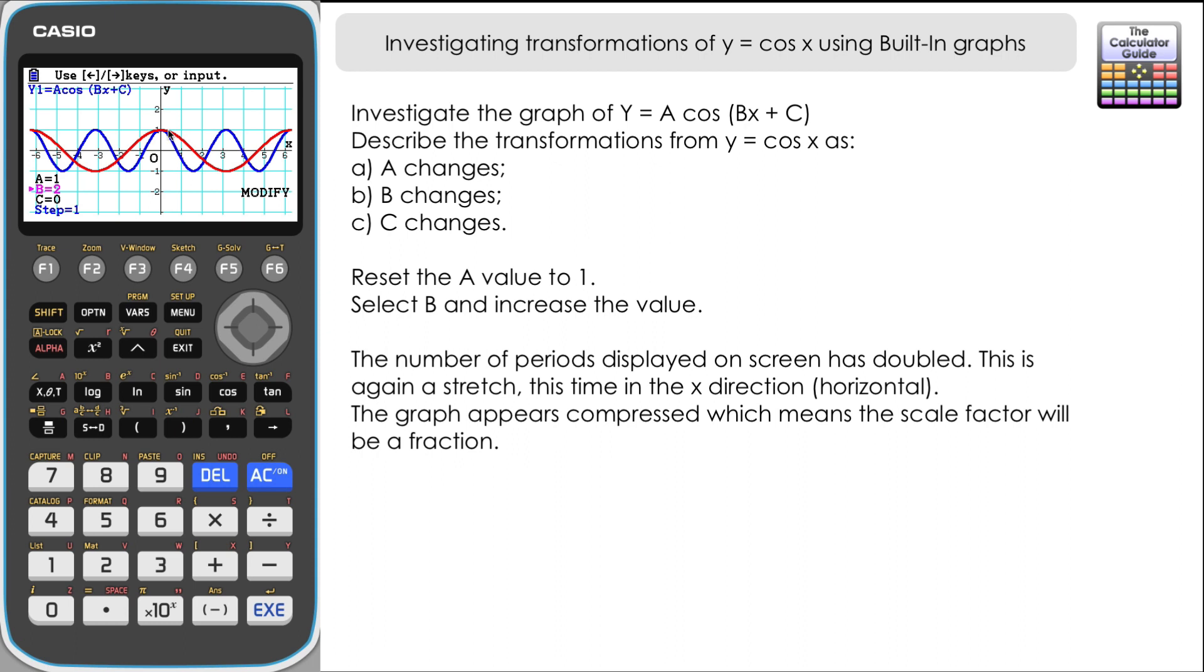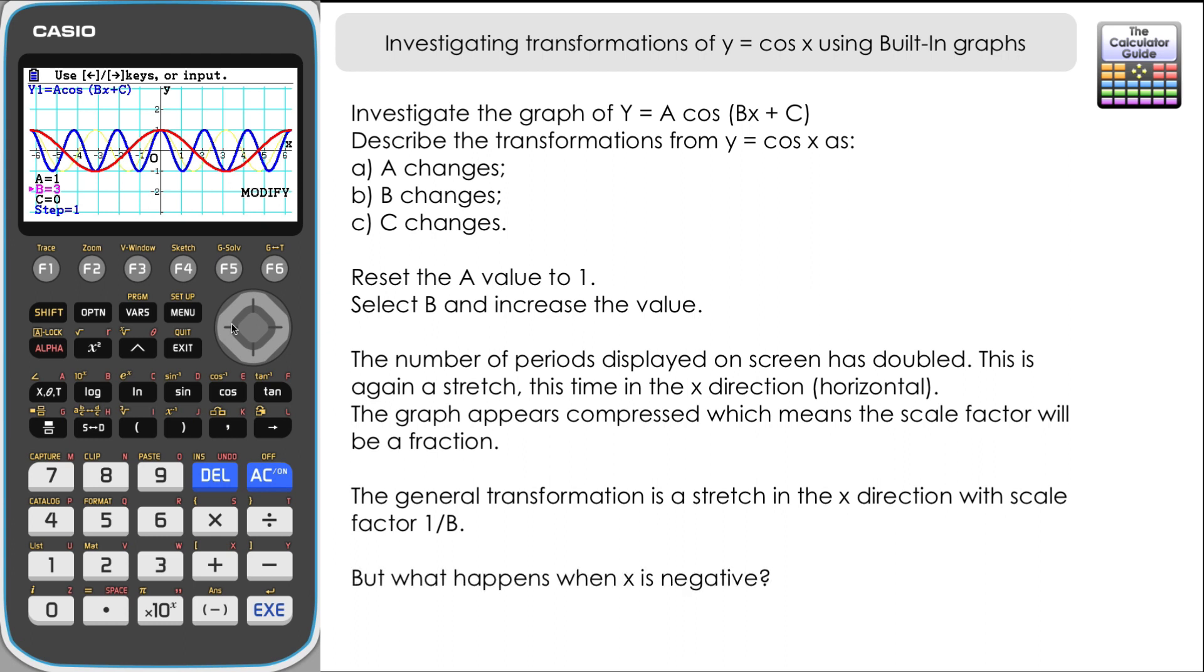Now let's see what happens if we increase that to 3. Well this time we've got three times as many periods going on on the graph as we had before. So this is going to be a stretch in the x direction, horizontal direction, with a scale factor of 1 third. So the scale factor is going to be 1 over your value for b.